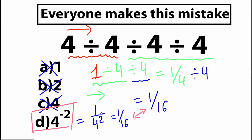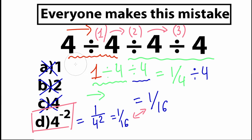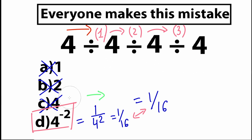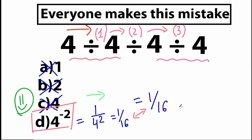According to the correct order of operations — PEMDAS — with a basic expression containing only division, we go left to right step by step: first division sign, second division sign, third division sign. In the wrong previous solution, we jumped from the first sign directly to the third sign — dividing 4÷4 on the left and 4÷4 on the right — and that is absolutely wrong. The correct answer is D: 4 to the power of minus 2, which equals 1 over 16.